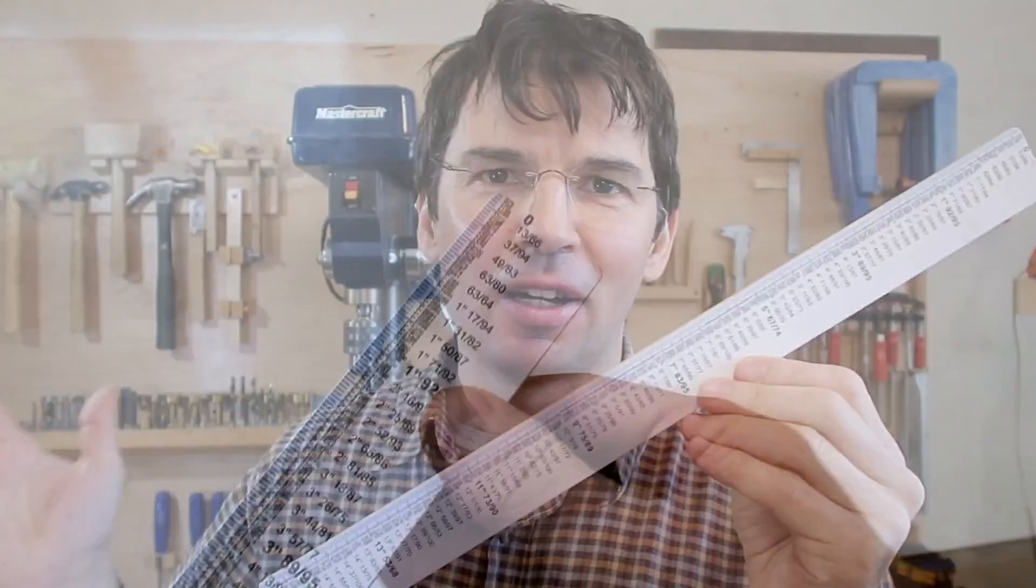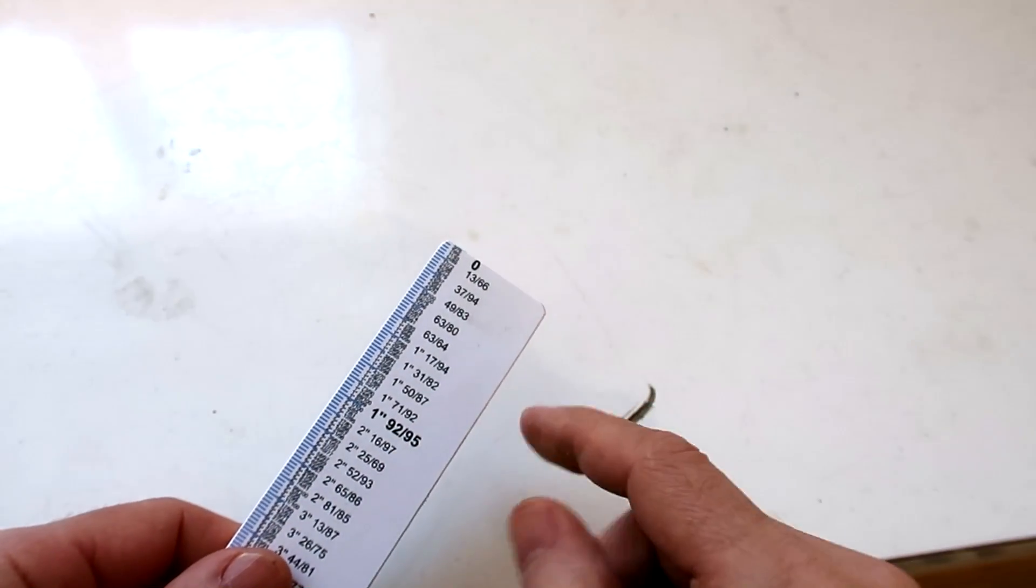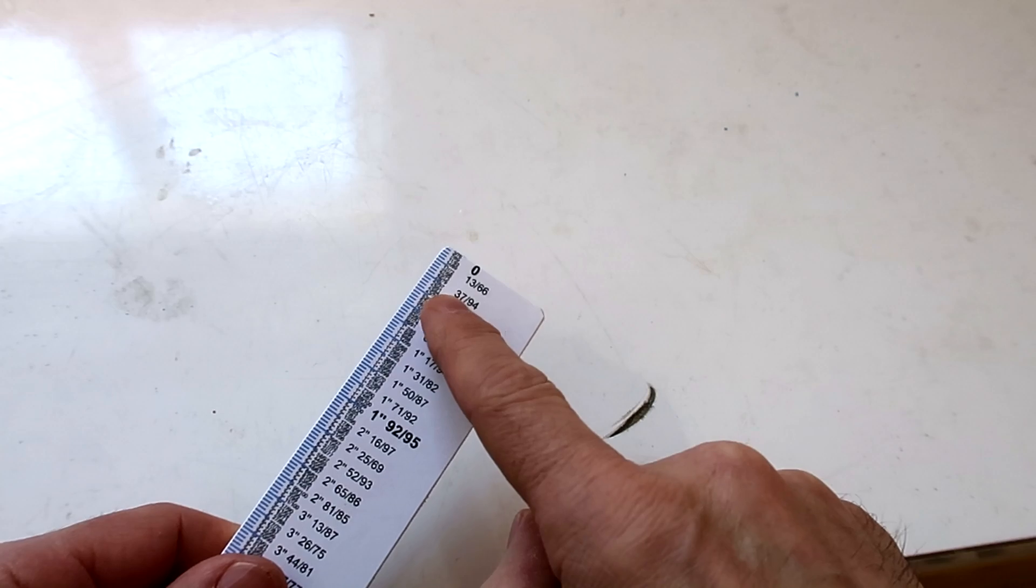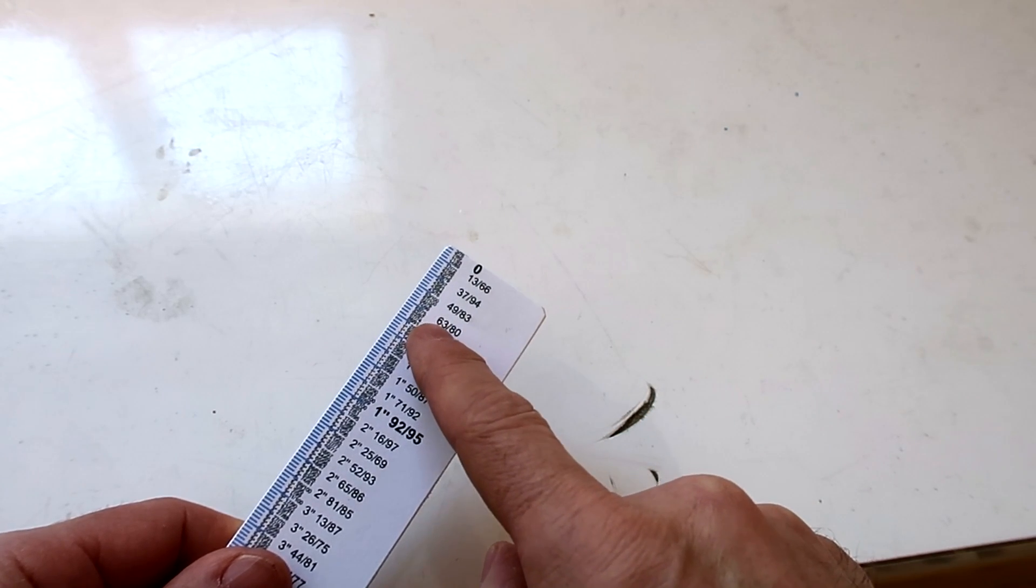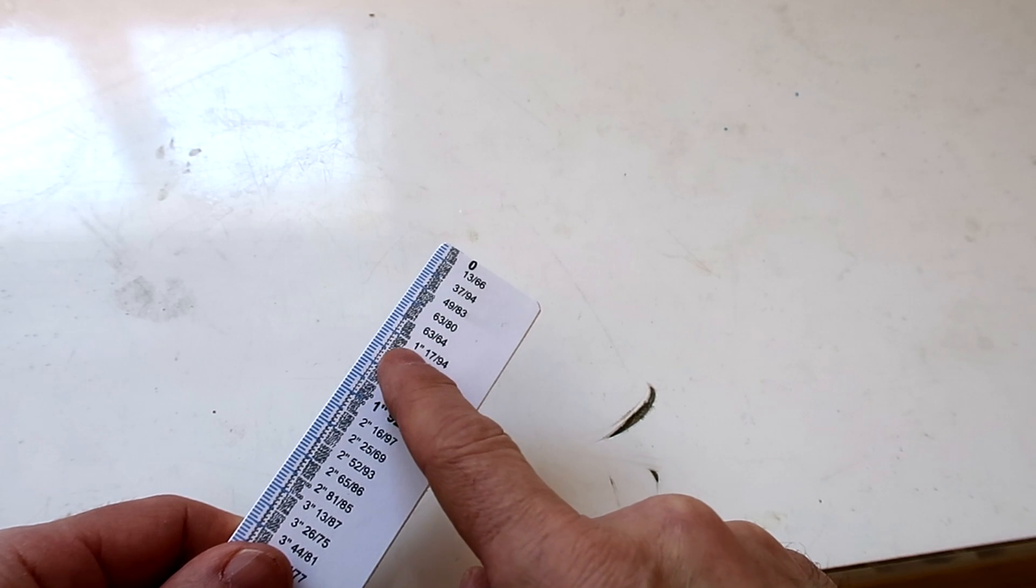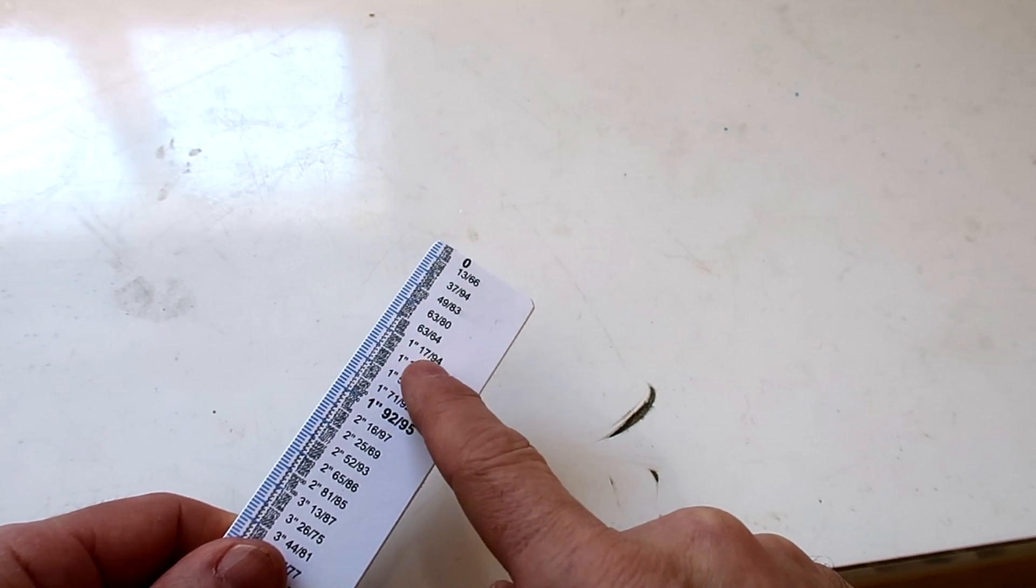I mean why limit yourself to powers of two for the denominator. So for example what would be one centimeter in metric is here 37/94th, and what would be two centimeters would be 63/80th, and three centimeters would be one inch and 17/94th.